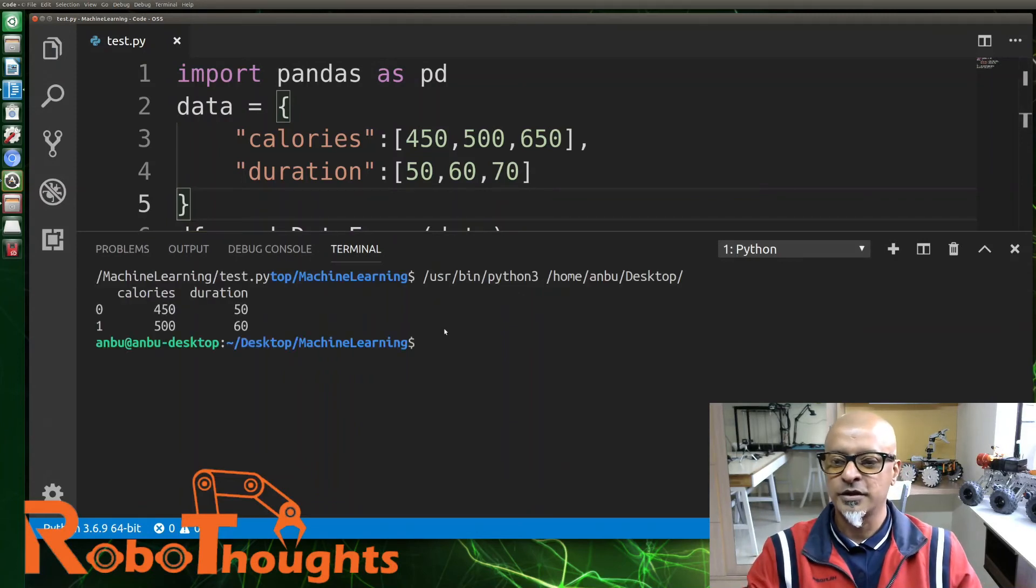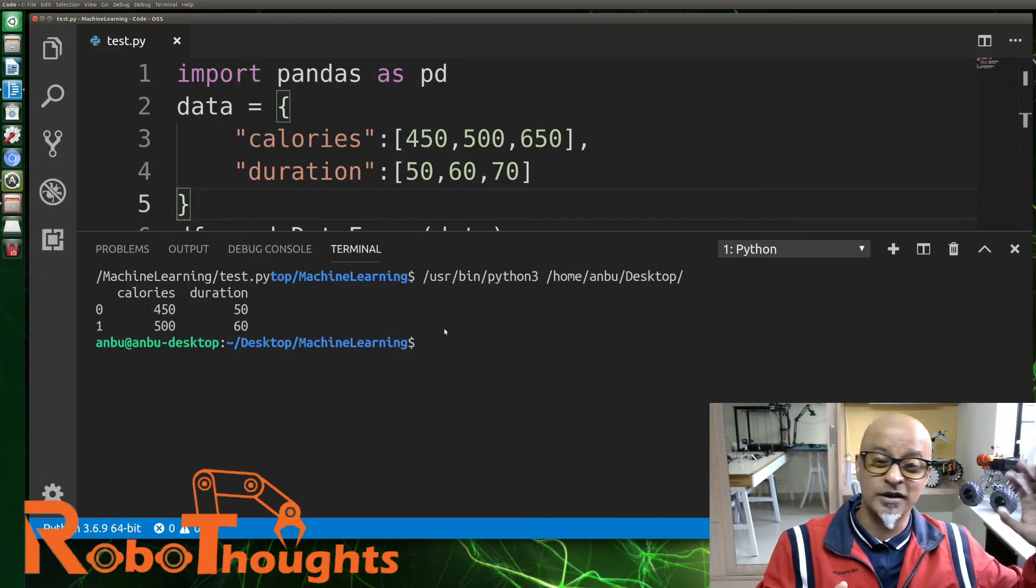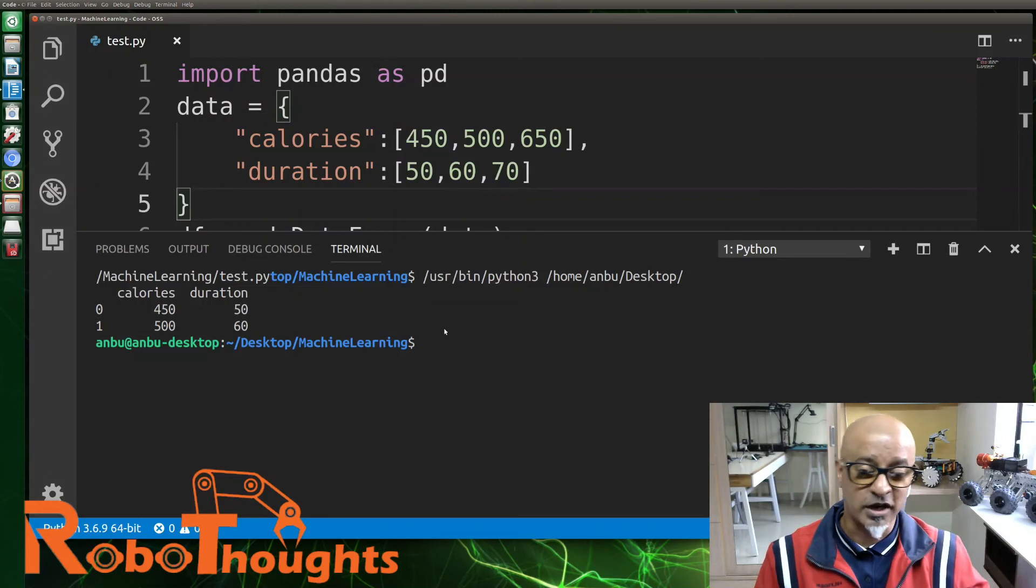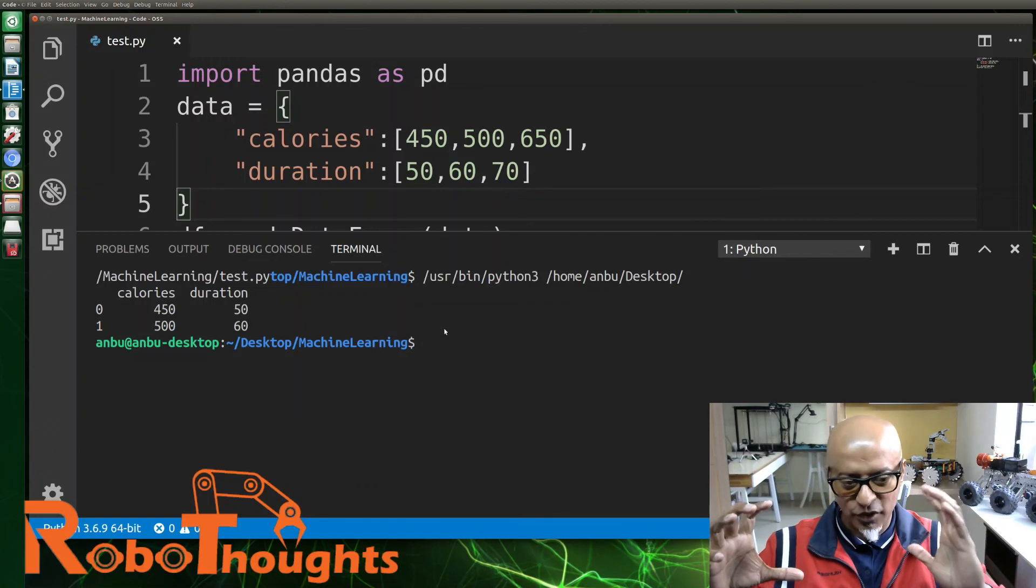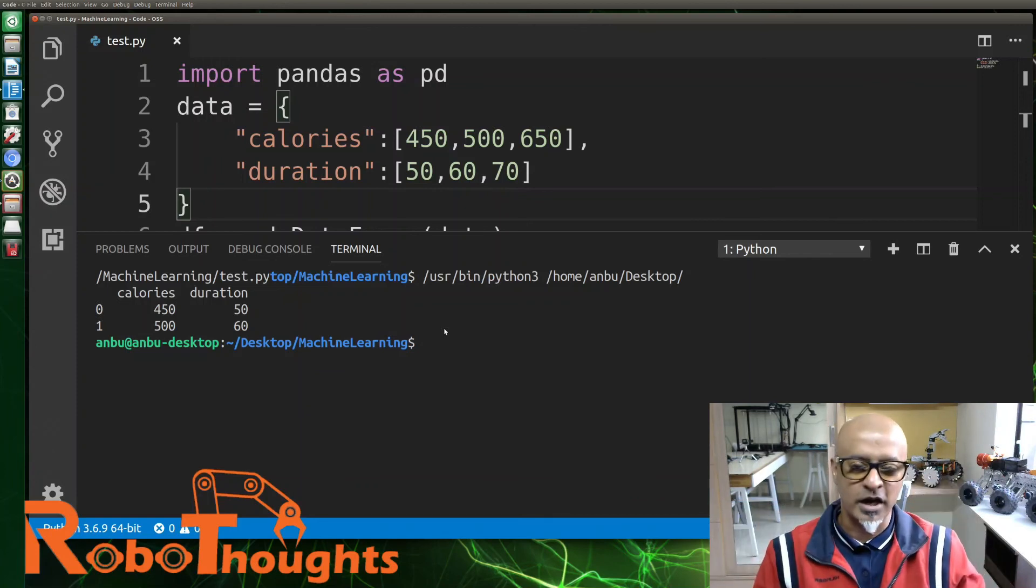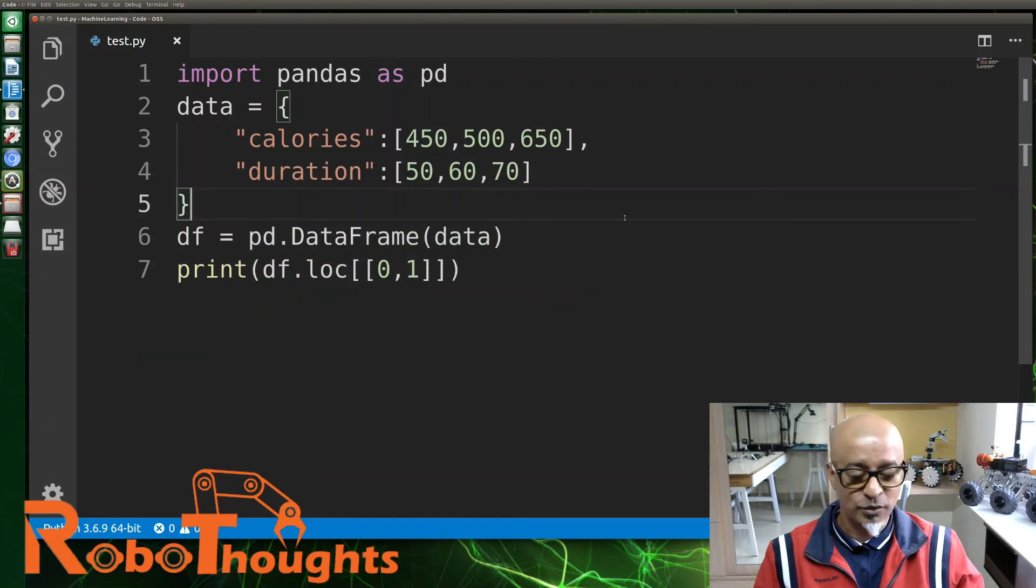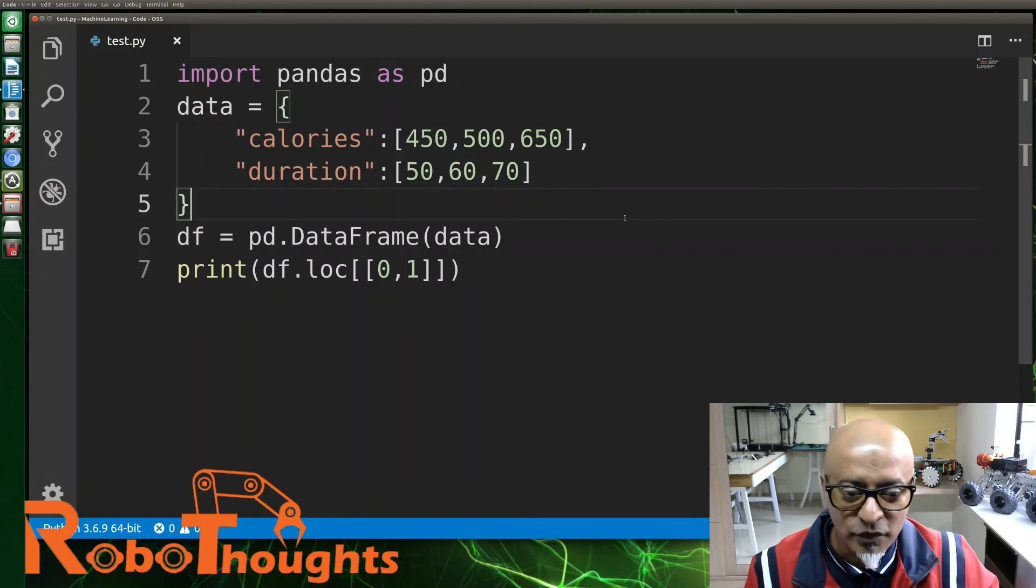There you go! Now you got zero and one. Same way you can keep adding—zero, one, two, three, hundred, five hundred, thousand—depends upon your data size. You can directly get into that particular set of array and grab from the DataFrame. That's how it is, guys. I hope you're enjoying this lesson. I'm going to get back to you very soon with a lot more examples in Pandas. It's going to get more and more interesting. Stay tuned, give me a thumbs up. Bye bye!